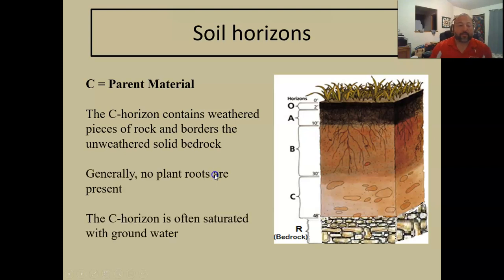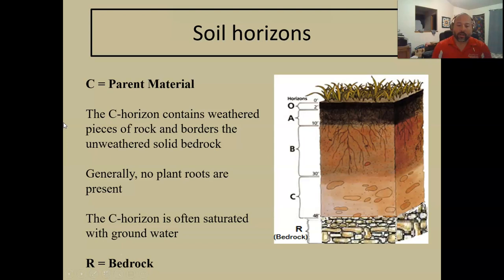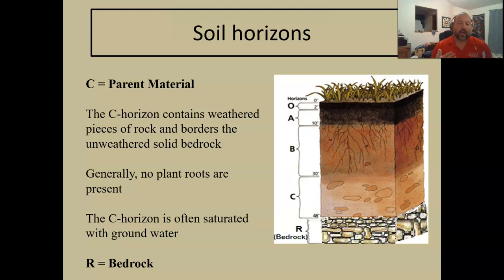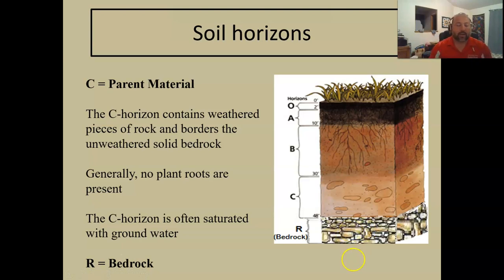That takes us to the C horizon — the parent material. It contains weathered bedrock, pieces of rock and boulders, with unweathered solid bedrock below. Generally you find no plant roots here, which is why aquifers usually end up in the C horizon or below it — the area becomes saturated with groundwater stored in the pores between rocks. And then below that you just get your bedrock, a big solid piece of rock that nothing goes through.